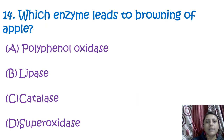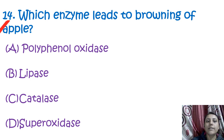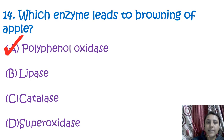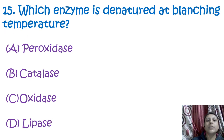The next question is: which enzyme leads to browning of apple? Browning of apples is generally seen because of enzymatic browning. The answer is polyphenol oxidase. When polyphenol oxidase and phenolates come into contact with oxygen, it converts the apple surface to a brown color — this is known as enzymatic browning.